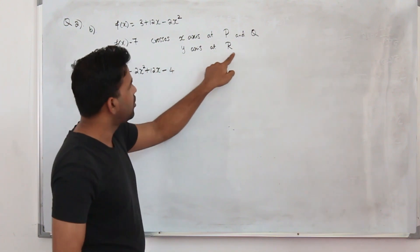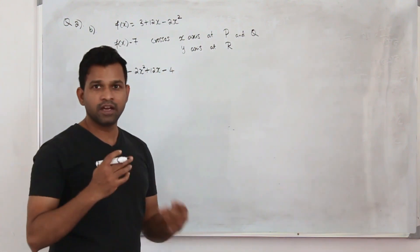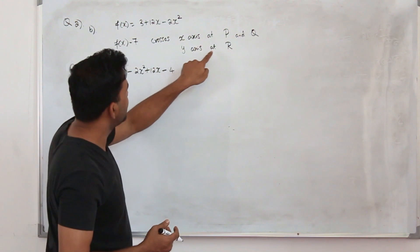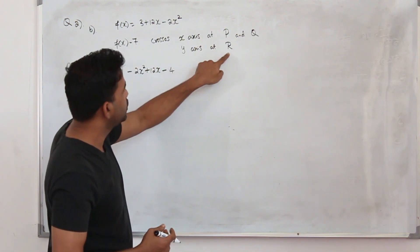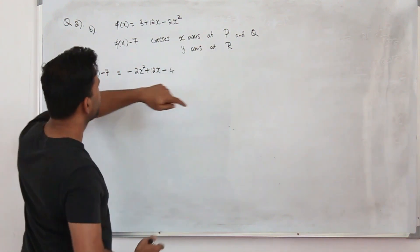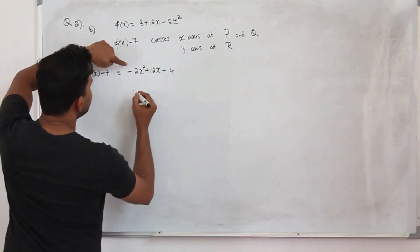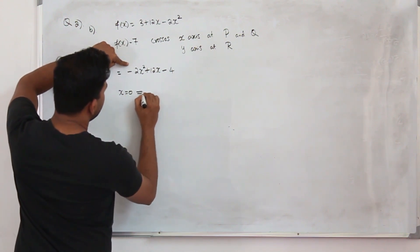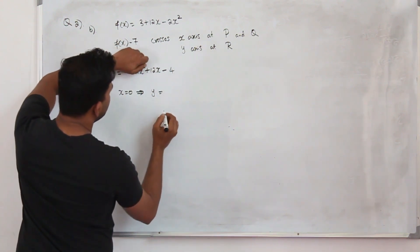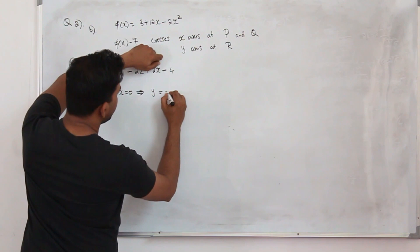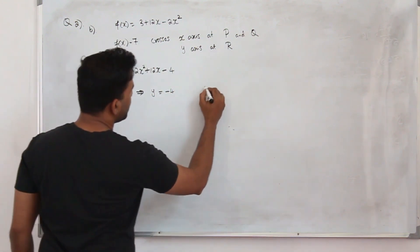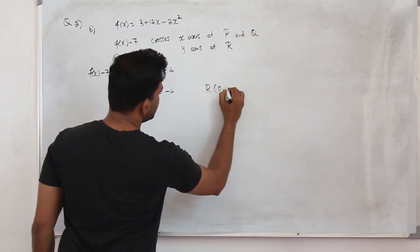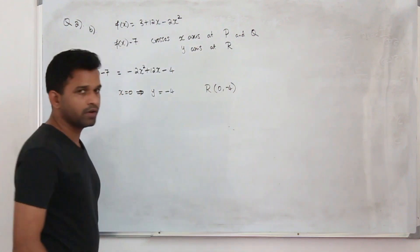This function crosses the y-axis at R, where the x-coordinate is 0. Replace x with 0: y = -2(0) + 12(0) - 4 = -4. So point R is (0, -4).